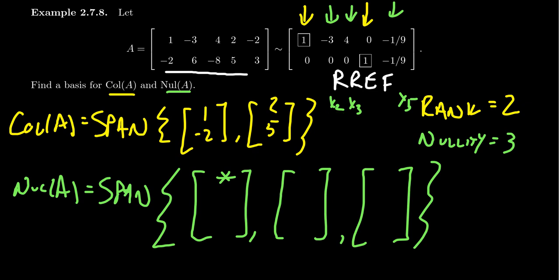So the first position gets a star, the second position gets 1 because we're doing x2 right now. Then x3 is a free variable put a 0, x4 is a dependent variable put a star, and then x5 is a free variable put a 0.